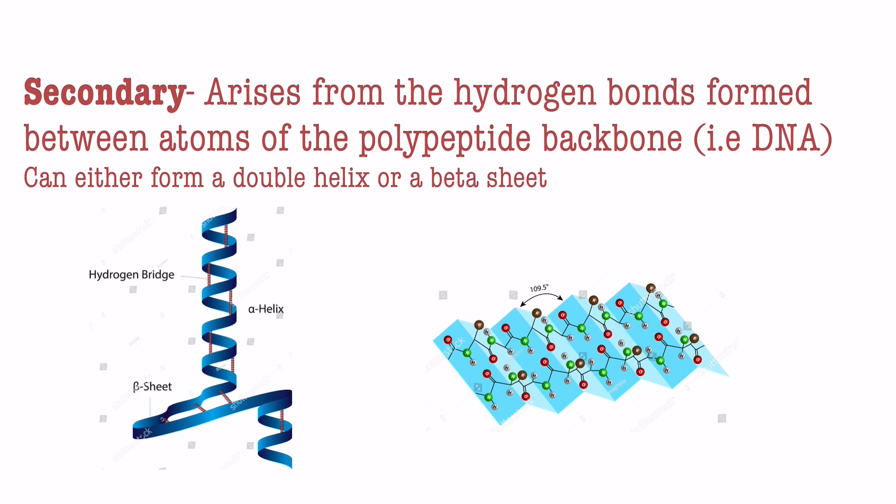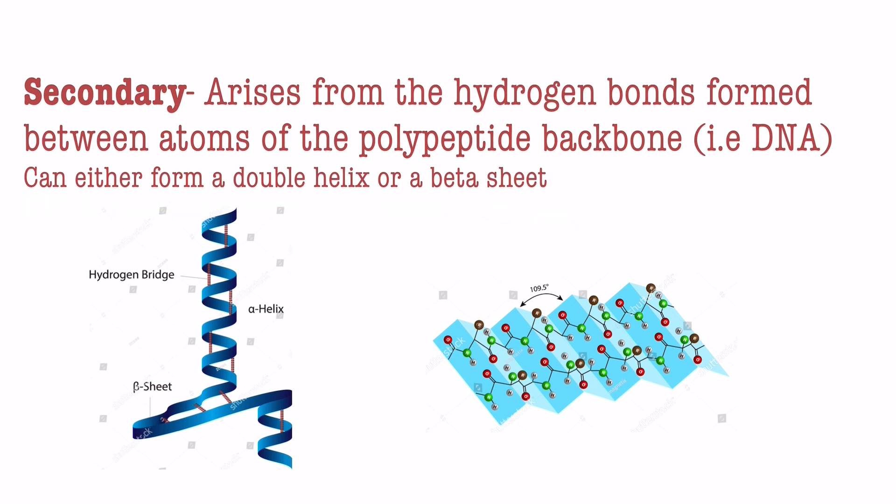Moving on to the secondary structure: the secondary structure arises from the hydrogen bonds formed between atoms of the polypeptide backbone. In my last video we talked about how the DNA double helix is formed through hydrogen bonds. With the secondary structure, either a double helix can be formed or a beta sheet — sometimes called a pleated sheet or beta pleated sheet — which is what is shown over here.